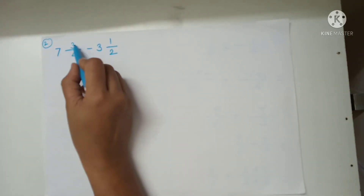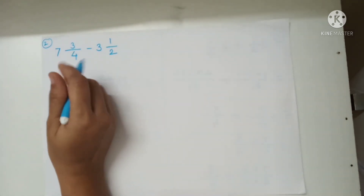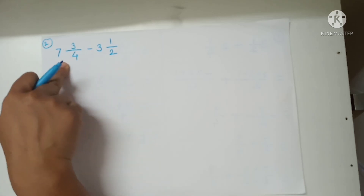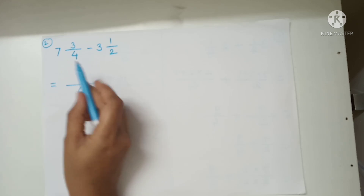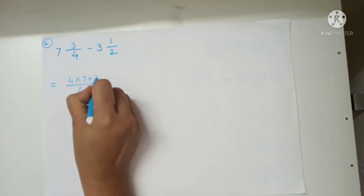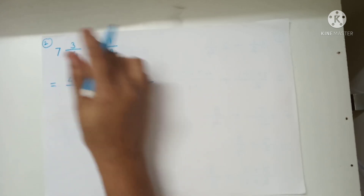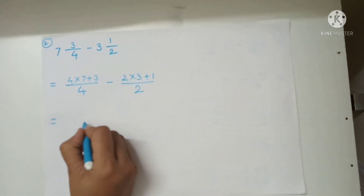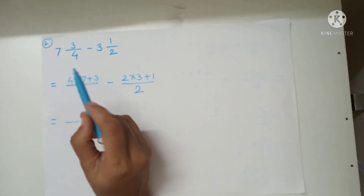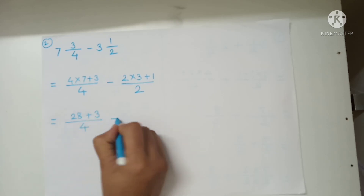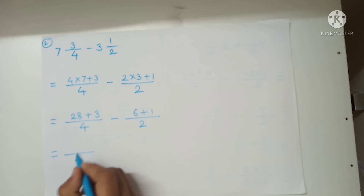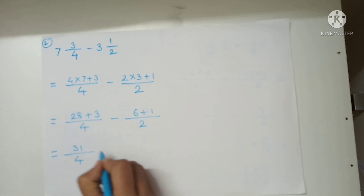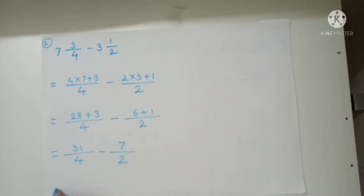Now subtraction: 7 and 3 upon 4 minus 3 and 1 upon 2. First of all we have to convert these mixed numbers into improper fractions. Next step: 4 multiplied by 7 plus 3, minus 2 multiplied by 3 plus 1. So 4 sevens are 28 plus 3, minus 3 twos are 6 plus 1. That gives 31 upon 4 minus 7 upon 2.